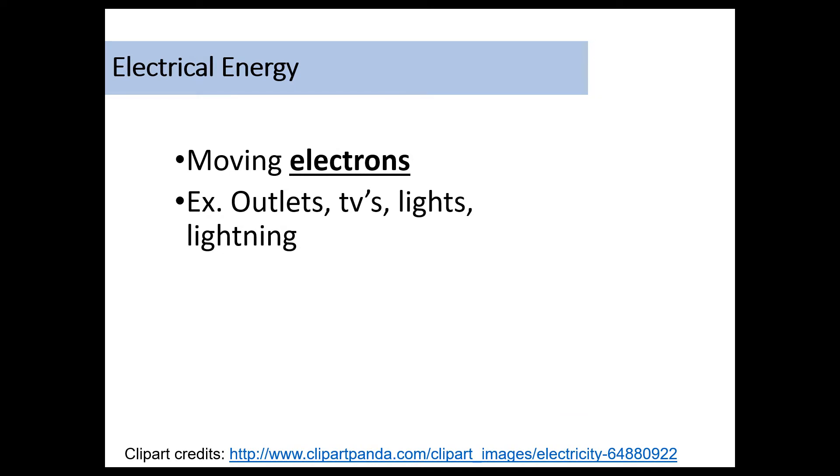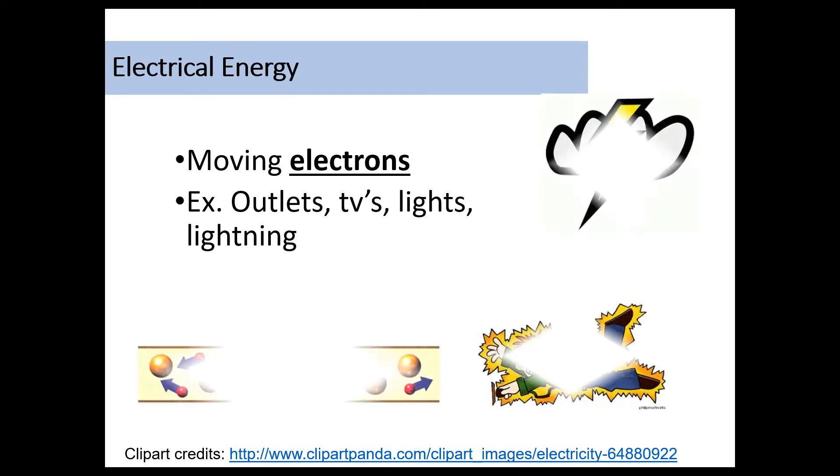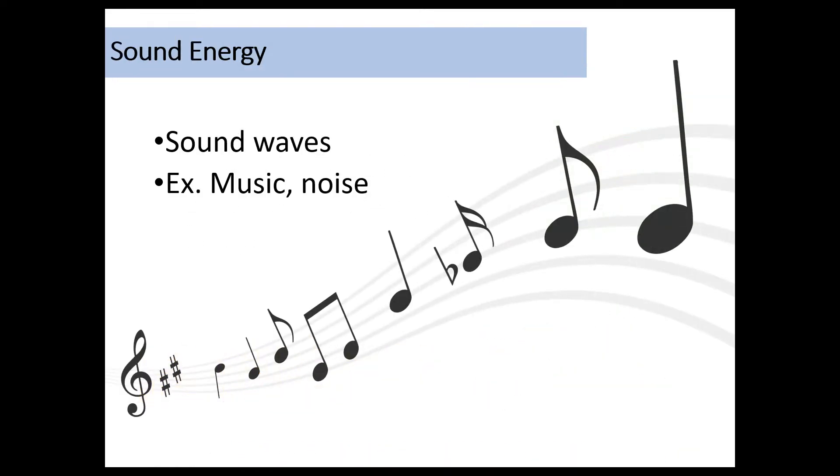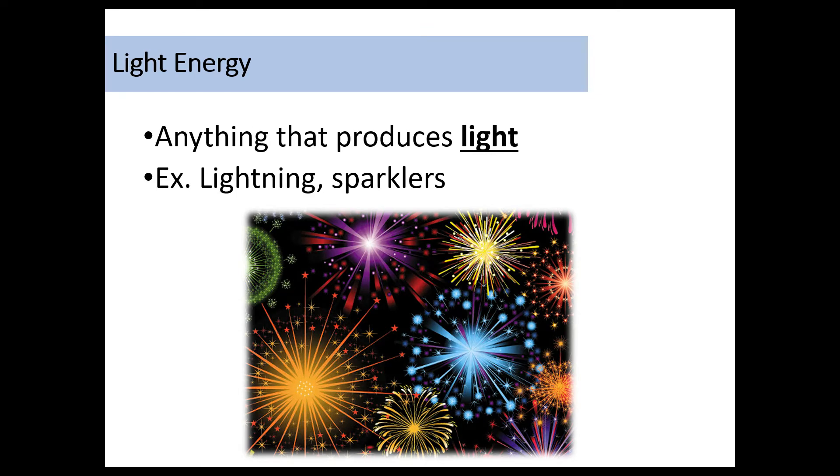Electrical energy is just basically when electrons move. And so examples would be like outlets, TVs, when you flip on your lights. Lightning is an example of electrical energy through a process called induction. Again, we'll get to that in this unit. Sound energy is produced by anything that makes a sound. So lots of examples of that. Light energy is also sometimes referred to as radiant energy. And it comes from anything that produces a light.